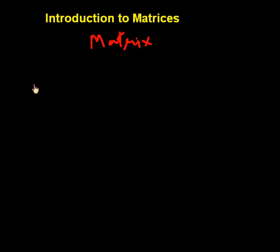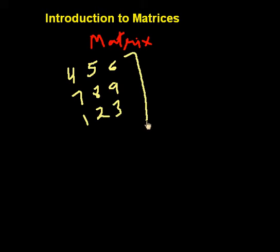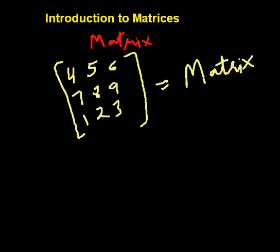A matrix is a collection of numbers in two brackets. Suppose 4, 5, 6, 7, 8, 9, 1, 2, 3. If this collection is in two brackets, initial and terminal, then this will be a matrix.